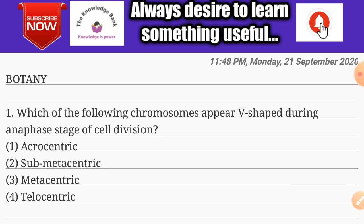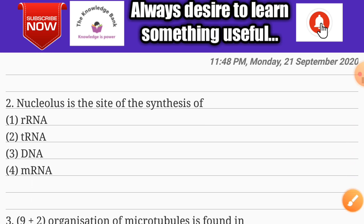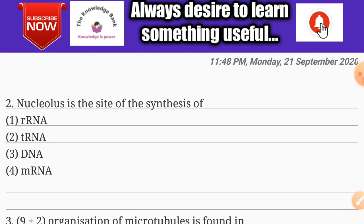Botany question number one: which of the following chromosomes appear V-shaped during the anaphase stage of cell division? Options are acrocentric, submetacentric, metacentric, and telocentric. The correct answer is option C: metacentric.